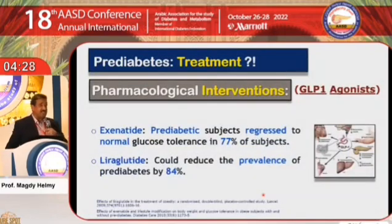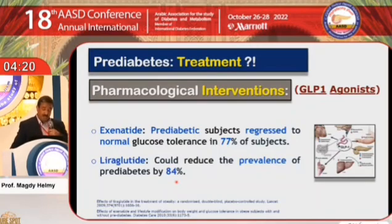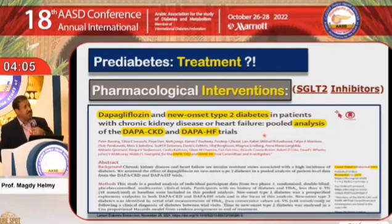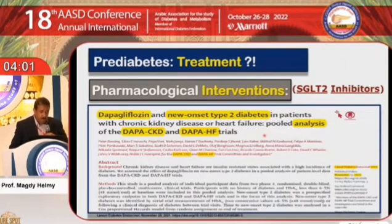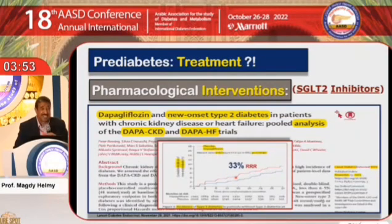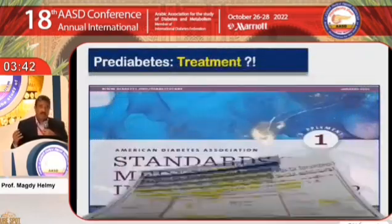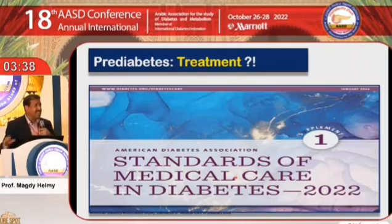GLP-1 receptor agonists have performed very well, with figures reaching more than 80% reduction in incidence of diabetes in pre-diabetics, along with regression to euglycemia. SGLT2 inhibitors — gliflozins — in a pooled analysis of patients from DAPA-CKD and DAPA-HF showed a 33% reduction in new cases of type 2 diabetes. So we have several pharmacological agents together with lifestyle to address the question of how to treat pre-diabetes.